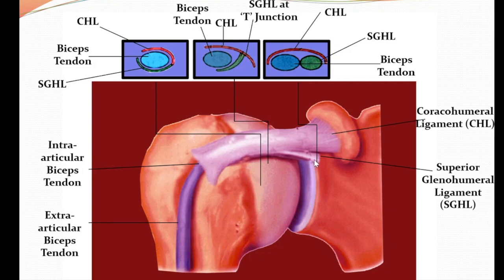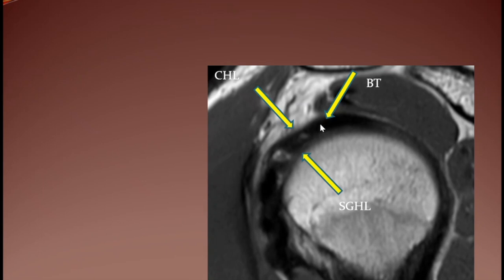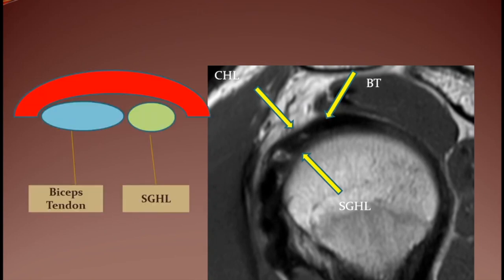The long head of the biceps originates intra-articularly from the supraglenoid tubercle of the scapula and the superior labrum. After originating, the disposition of structures is as follows: the SGHL and biceps are one beside the other and the coracohumeral ligament is above. As we progress distally, we find that the SGHL comes to the undersurface of the biceps tendon — this is called the T-junction — and the coracohumeral ligament remains above.